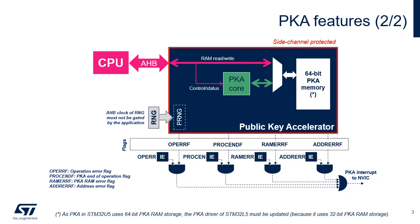Once the PKA reports the end of operation with the PROCENDF flag, the CPU reads the resulting data from the PKA RAM, then clears the PROCENDF flag. Software can abort a PKA operation at any time by clearing the EN bit in the PKA CR register. In this case, the content of the PKA memory is not guaranteed.